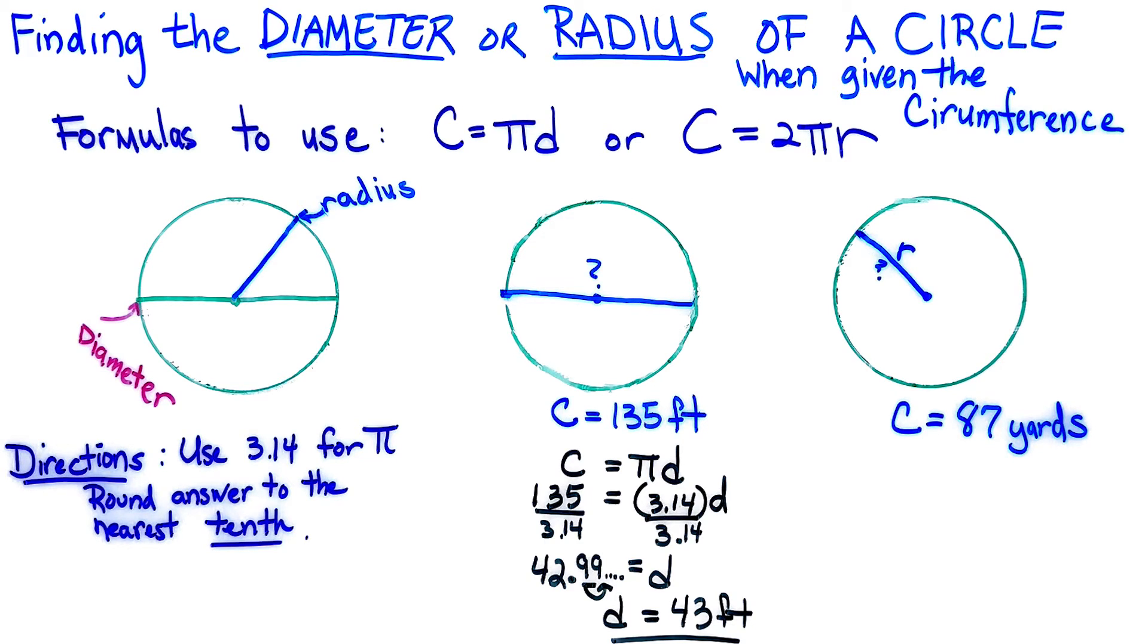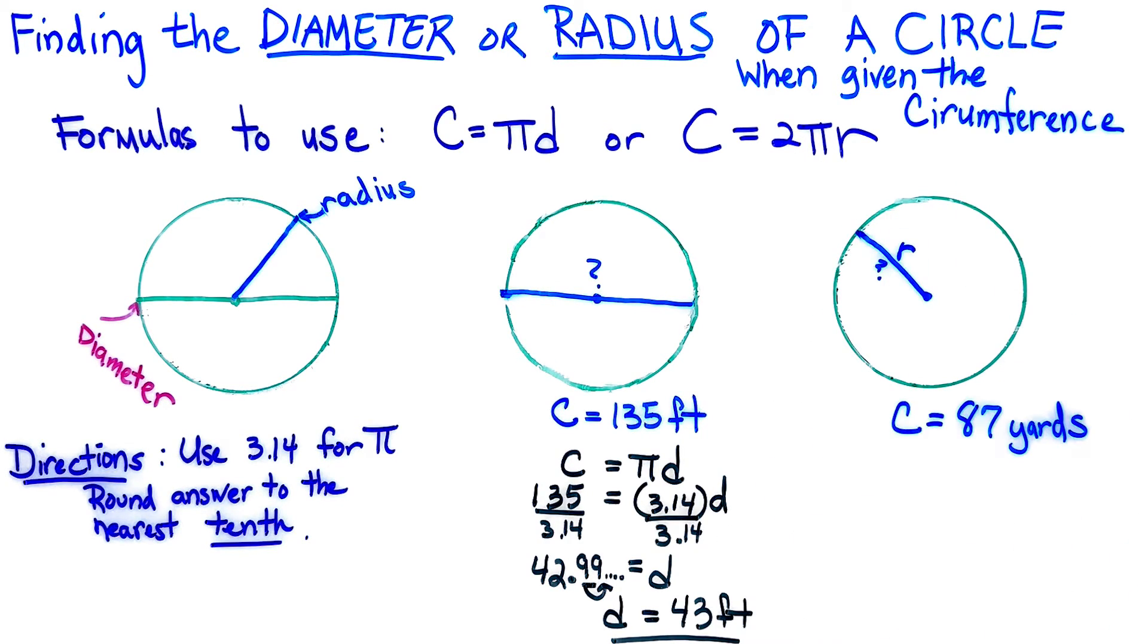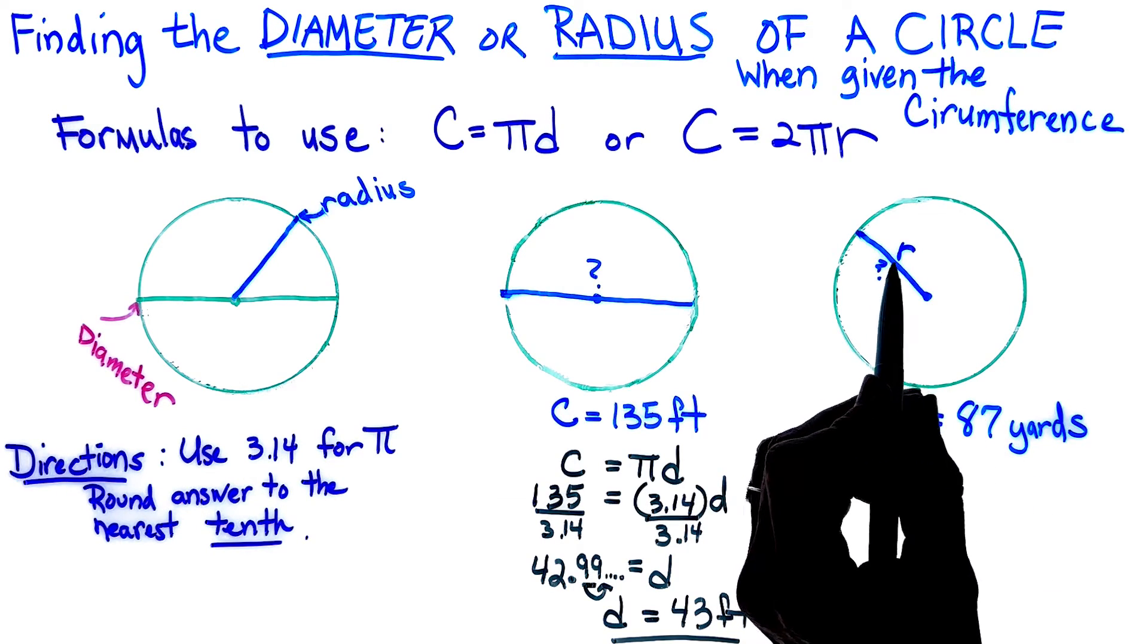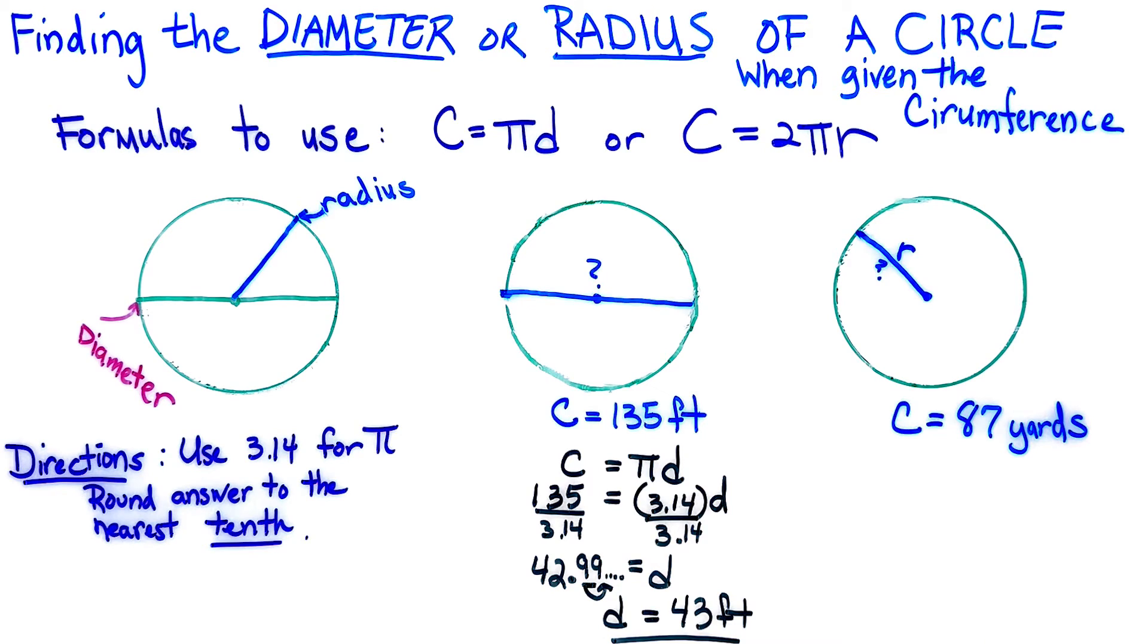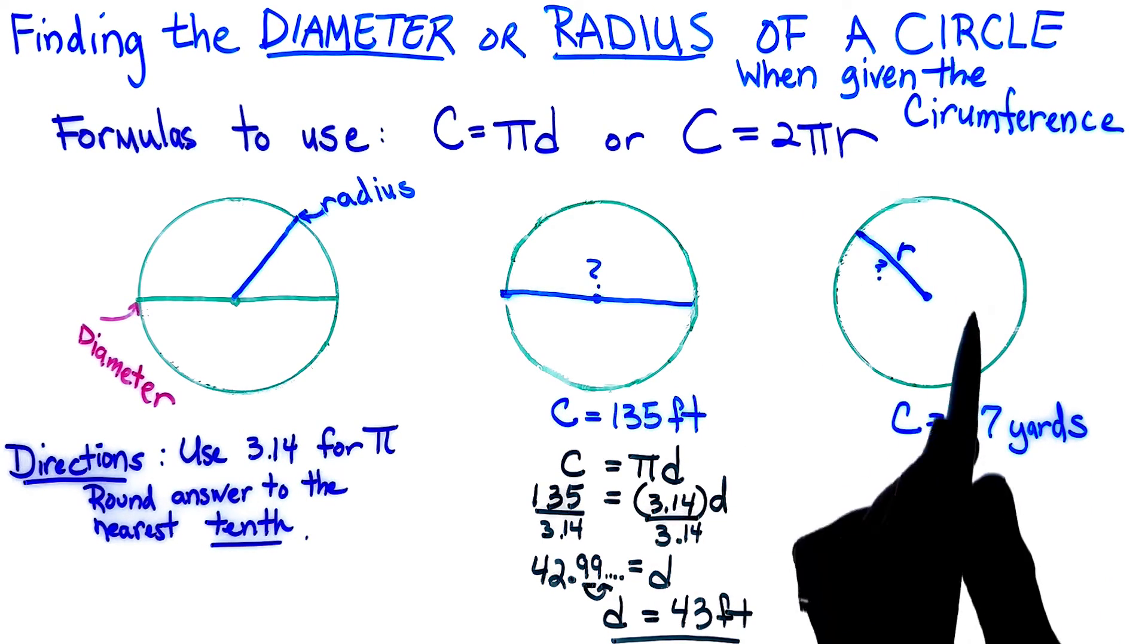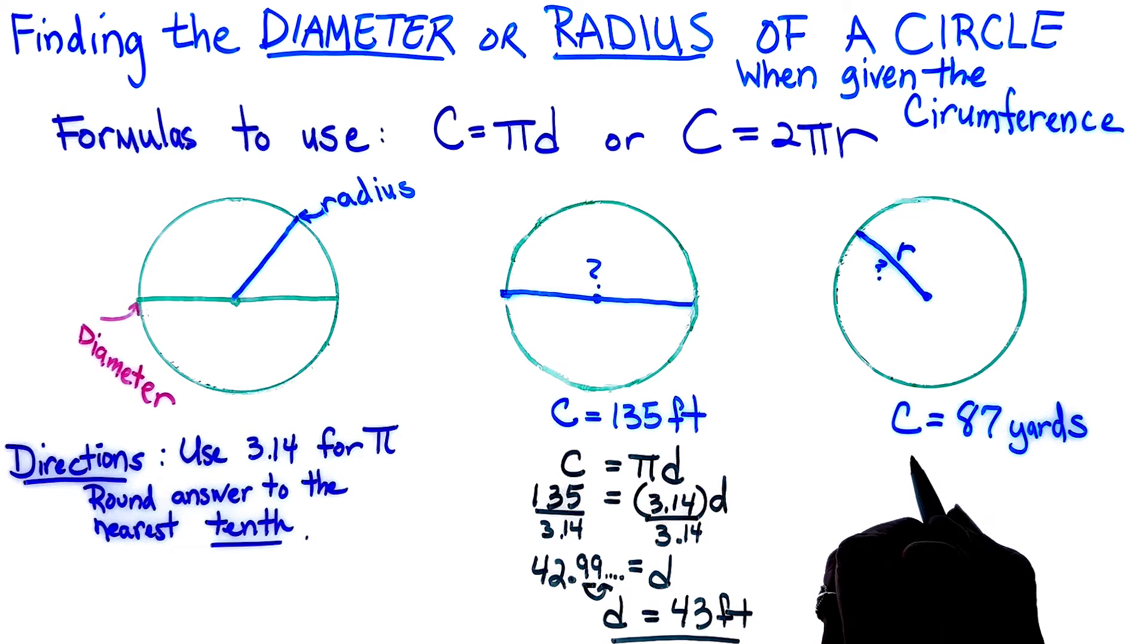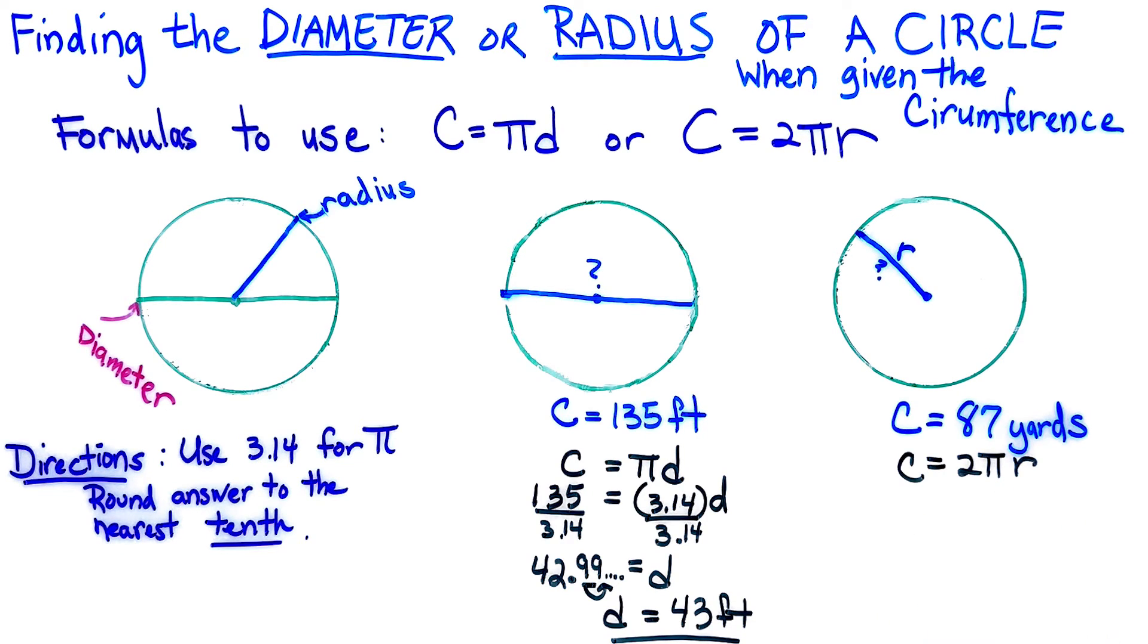Let's look at the next circle. Again, they gave us a circumference, a distance around the circle. They want us to find the radius. So we do have two formulas that we can use, and I think I'll use the one that has the radius in there since that's what they want me to find. So again, I write my formula always to make sure that I substitute my numbers in the proper areas.